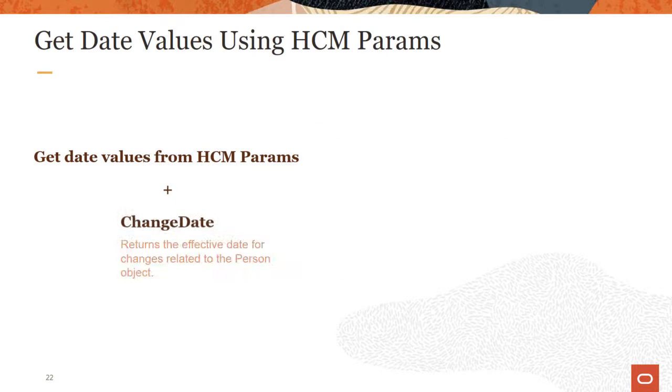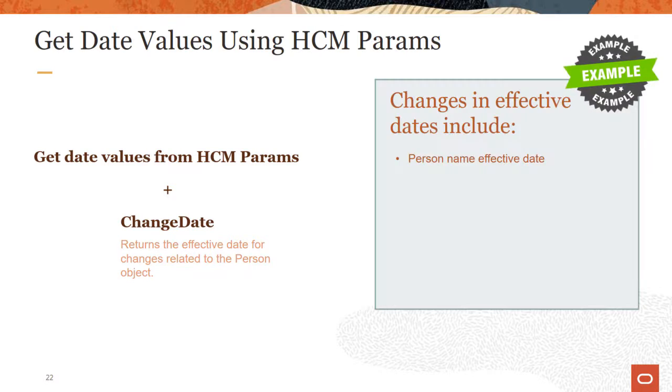The get date values from HCM params global function can be used with the change date parameter. The change date parameter returns the effective date for changes related to the person object. Some examples of changes in effective dates include person name effective date, marital status effective date, address change start date, and visas and permit start date.